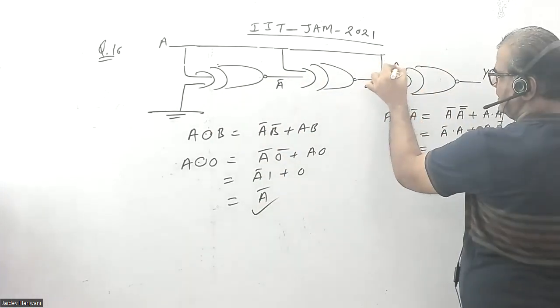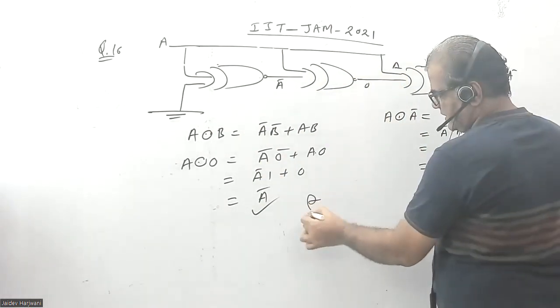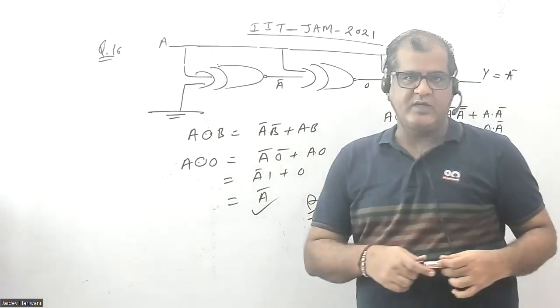So this is coming here, and A XNOR 0 again will give you A bar. So A bar is the answer for this question. Thank you very much.